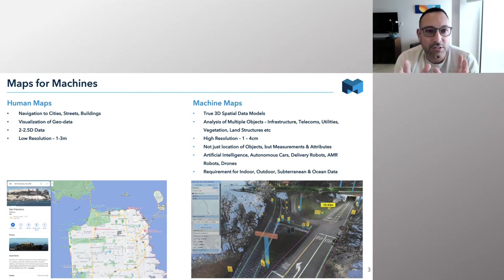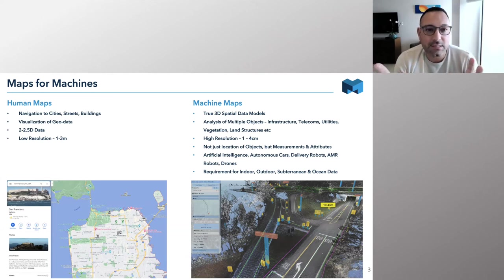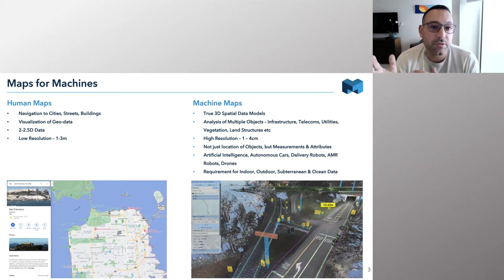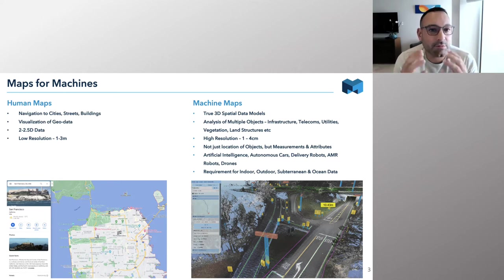It's not just about the location of objects — it's also about understanding the features and the attributes. We're pulling back measurements and other data, which is incredibly important. When I talk about machines, I mean everything from artificial intelligence models that are there to understand cities and ecology and environments, all the way through to new forms of autonomy, whether that's autonomous vehicles, robots, or drones. There's a real requirement that this data exists everywhere — not just outdoors. We're looking at indoor, subterranean data, and even ocean data as well.